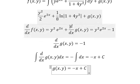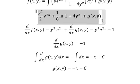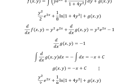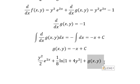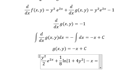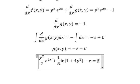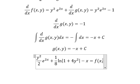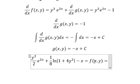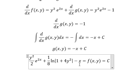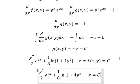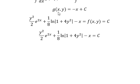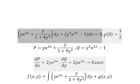We return back and substitute: we replace g(x) with negative x. We also know that F(x, y) equals C, so setting F(x, y) equal to C, we write out the full solution and put C in here.